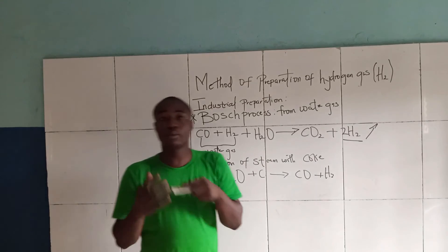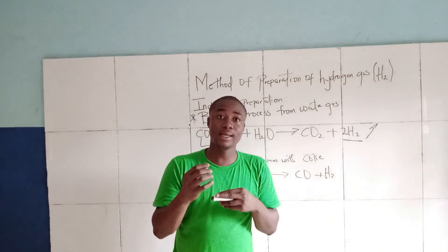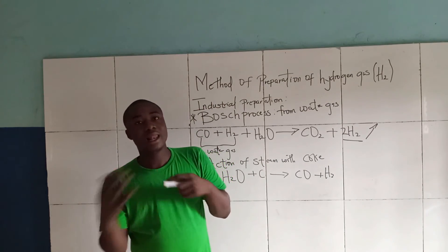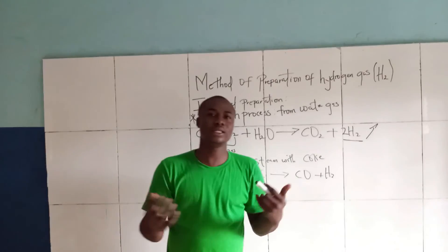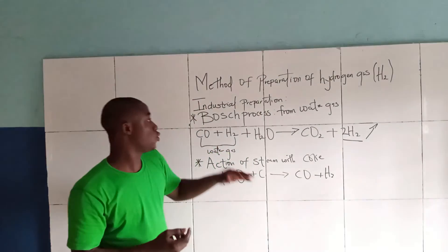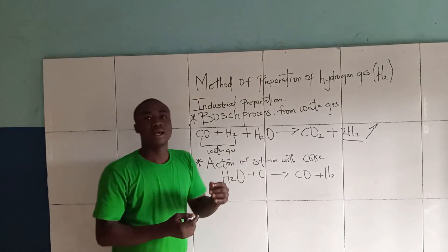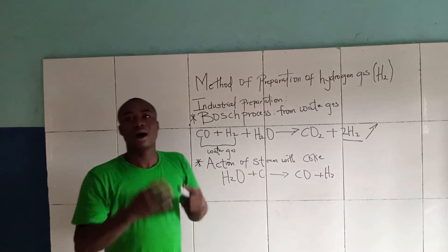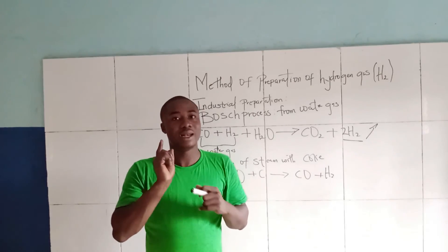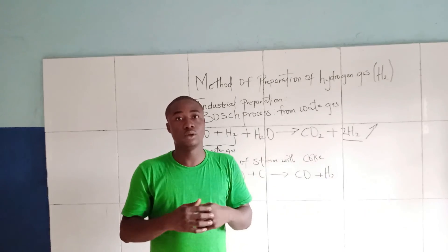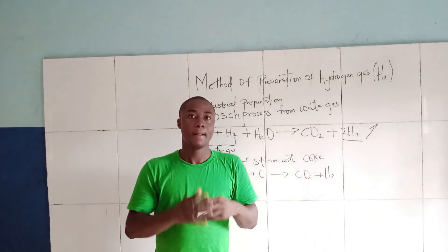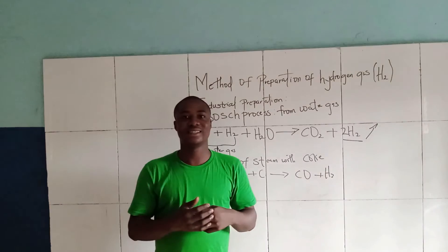Another industrial process is electrolysis of water. Electrolysis of water is done with an instrument called the Hofmann Voltameter. These are the industrial and laboratory processes of preparation or displacement of hydrogen gas. Thanks for watching.